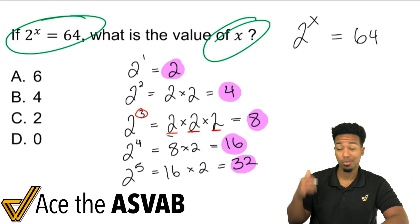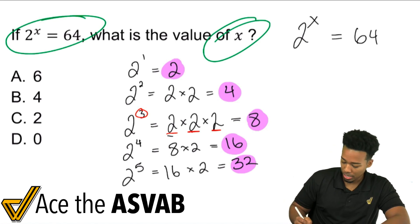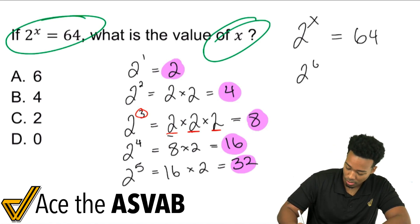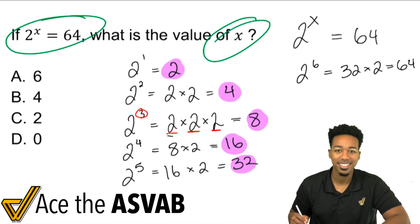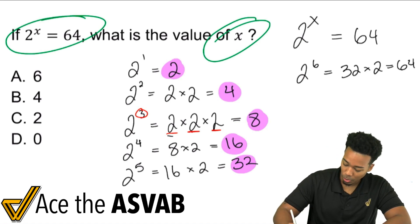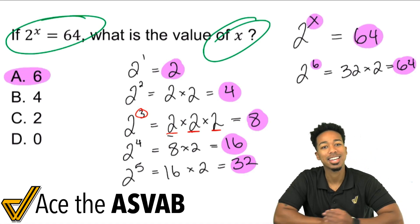Once you get this down, you can get a problem like this done in 30 seconds. But obviously, we have to go through the motions. So here we go. 2 to the power of 6, what would that be? Well, that'd be 32 times another 2. And guess what? That right there, my friends, is 64. And there it is. Boom. So we see that 2 to the power of 6 is what gives us 64, and that's what makes the answer A.